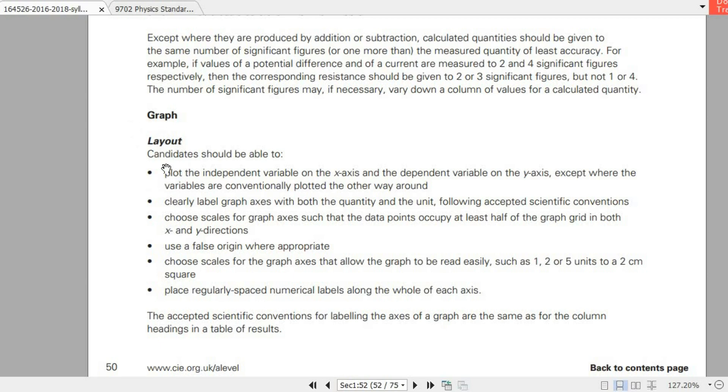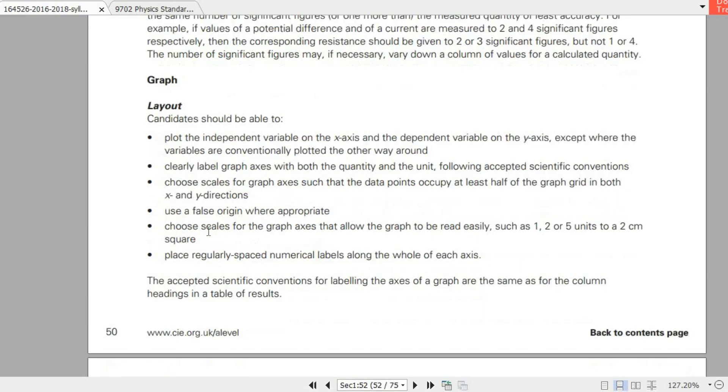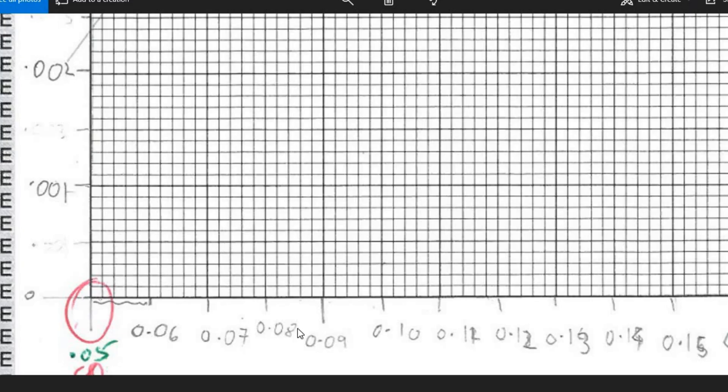This is the AS9702 Cambridge syllabus. Let's talk about the graph. You have the concept of the layout of the graph. The layout is basically about the axis, the x-axis and the y-axis. On the x-axis and the y-axis, you have to label them very well with their quantities. You have to make sure that you use SI units. And the scales on the graph shouldn't be anything which is an odd scale, but should be values of 1, 2, 5, or 4.